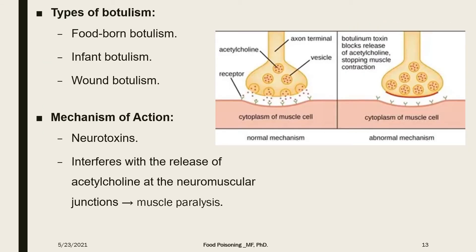There are different types of botulism. The most common is food-borne botulism, which is the main topic of this lecture. Infant botulism happens when babies ingest food containing spores, which germinate and grow inside the stomach due to immature enzyme development. Wound botulism occurs by contamination of any injury or open wound with the spores of the organism.